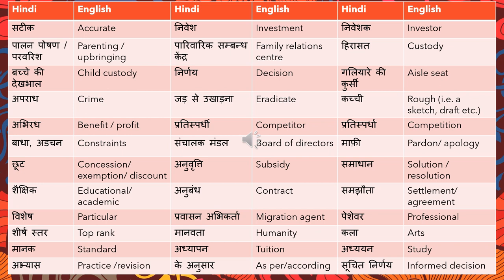'Chute' means a concession, exemption, or discount — for example, 'Aapko is avashyakta se chute mil gayi hai' means you are exempted from this requirement. 'Anuvriti' means subsidy. 'Samadhan' is a solution or resolution — 'Hume is samasya ka samadhan mil gaya hai.' 'Shaikshik' means educational or academic. 'Anubandh' is a contract. 'Samjhauta' is a settlement or agreement — for example, a rental agreement: 'Kirai ka samjhauta.'